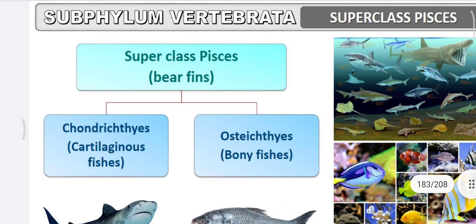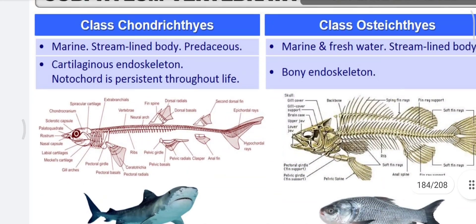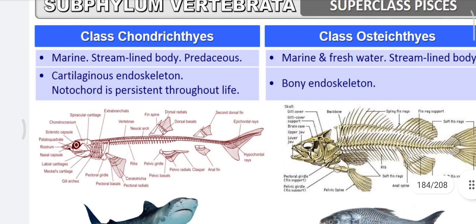In the superclass Pisces, there are two classes: Chondrichthyes and Osteichthyes. Chondrichthyes are the cartilaginous fishes, whereas Osteichthyes are the bony fishes. The endoskeleton is made up of cartilage in Chondrichthyes, which contain chondrin protein, while Osteichthyes have a bony endoskeleton.